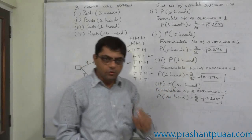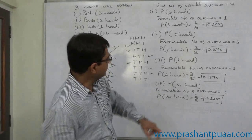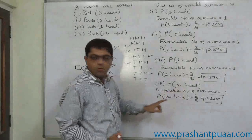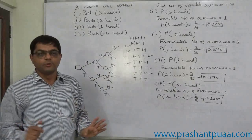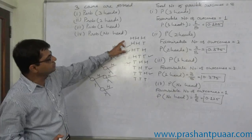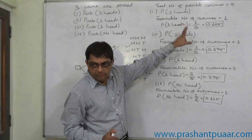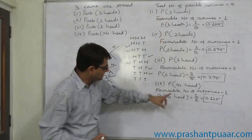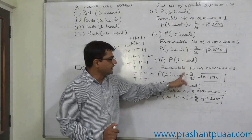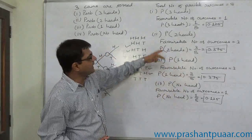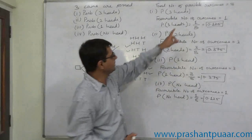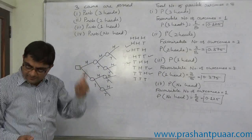If we toss three coins, we get either three heads, or two heads, or one head, or no head — no other fifth outcome is possible. The entire case can also be studied with reference to number of tails in the same way: probability of three tails equals probability of no head; probability of two tails equals probability of one head; probability of one tail equals probability of two heads; and probability of no tail equals probability of three heads. Again, the summation is 1.